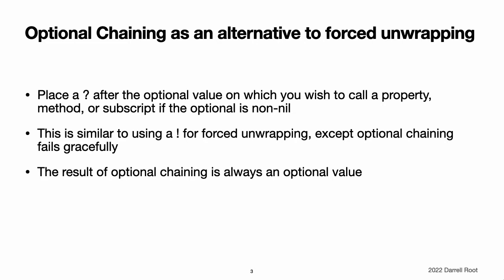method, or subscript you are querying returns a non-optional value. You can use this optional return value to check whether the optional chaining call was successful. The returned optional contains a value, or did not succeed due to a nil in the chain — the returned optional value is nil. Specifically, the result of an optional chaining call is of the same type as the expected return value, but wrapped in an optional.